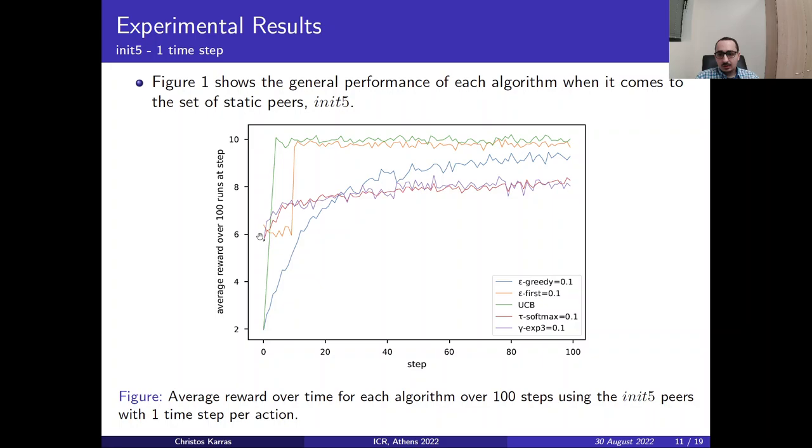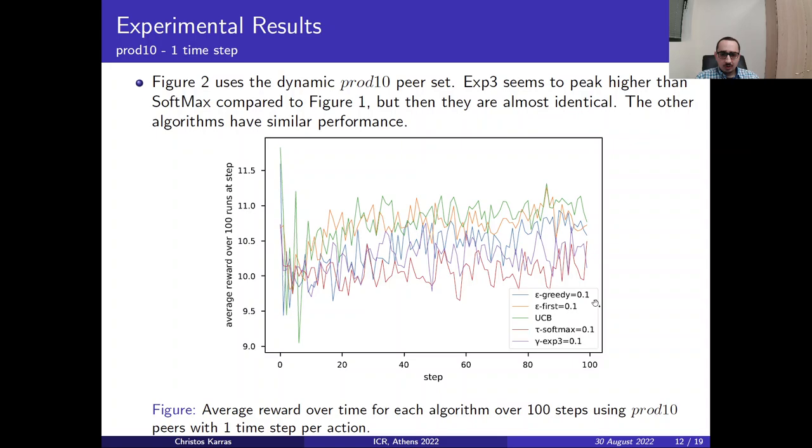On the other hand the ε-first started with a high reward even with zero time step. It struggled to find an optimal reward until approximately 10 steps.